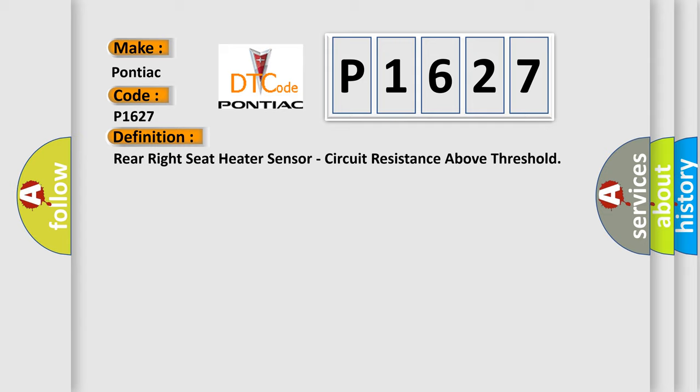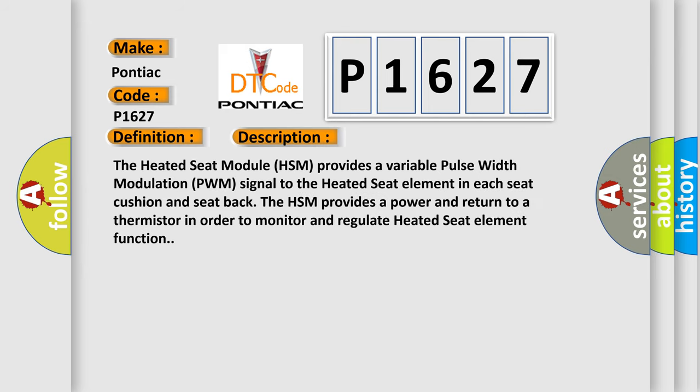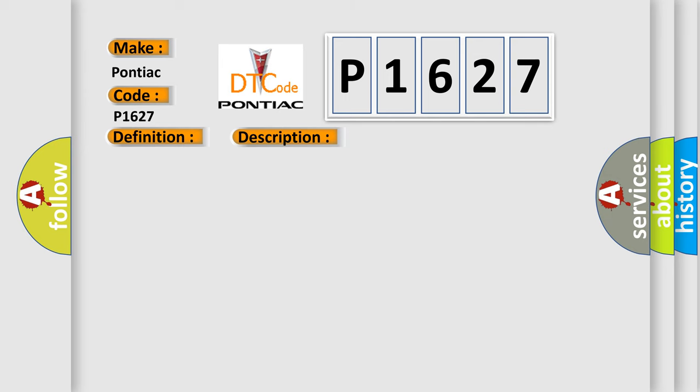The basic definition is: Rear right seat heater sensor circuit resistance above threshold. The heated seat module (HSM) provides a variable pulse width modulation (PWM) signal to the heated seat element in each seat cushion and seat back. The HSM provides power and return to a thermistor in order to monitor and regulate heated seat element function. This diagnostic error occurs most often in the following cases.